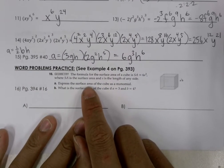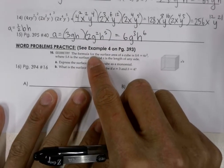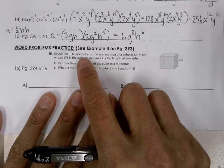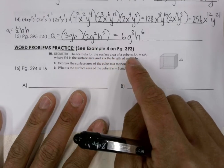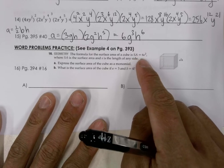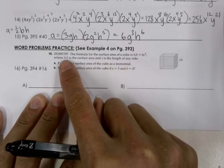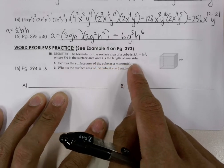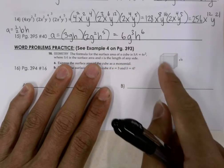So let's go ahead and look at this word problem. It's involving a geometric shape. Here we have a cube. And the formula for the surface area of a cube is SA, or surface area, is equal to 6S squared, where SA is the surface area, and S is the length of any side.